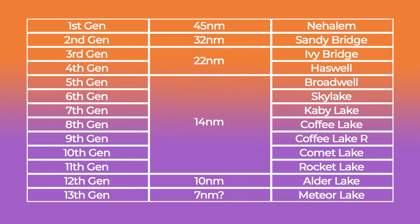Intel charged high prices partly because competitor AMD couldn't get a foothold in the CPU market. But in 2017 Ryzen launched, and despite early issues it became popular for its high price-to-performance ratio. Intel just couldn't compete and continued relying on the refined 14nm process node — 8th generation Coffee Lake, 9th generation Coffee Lake Refresh, and 10th generation Comet Lake all used a refined 14nm node with Skylake cores.